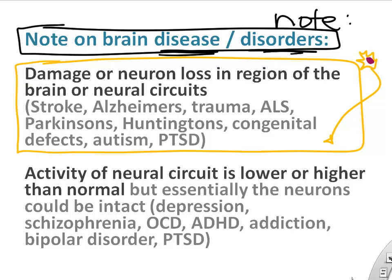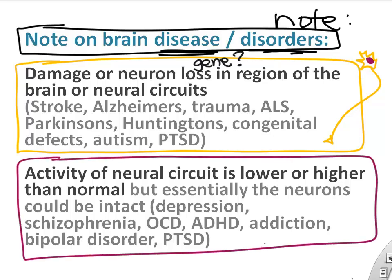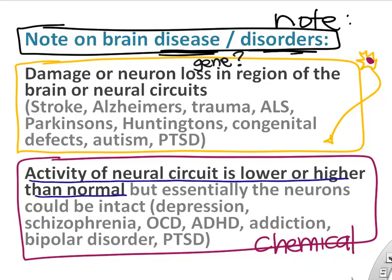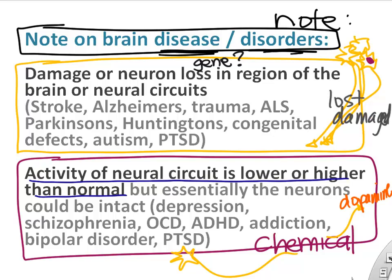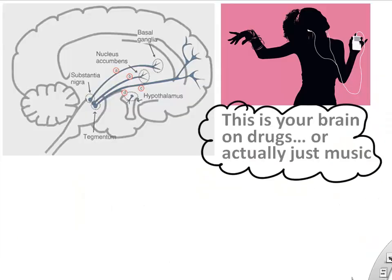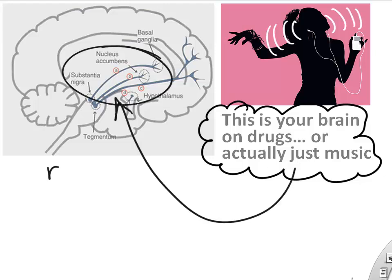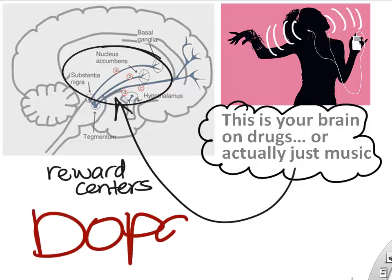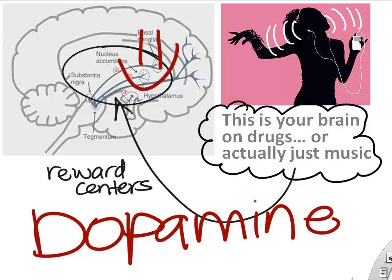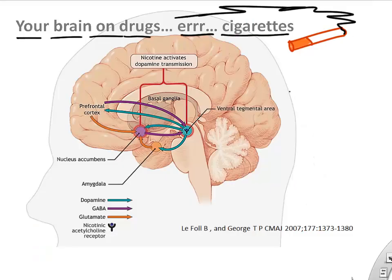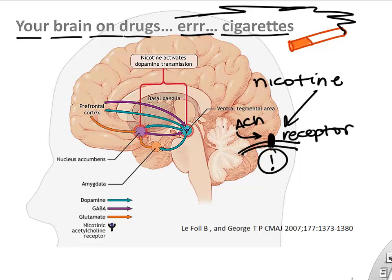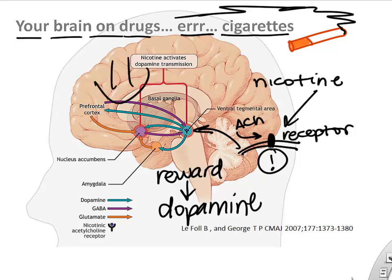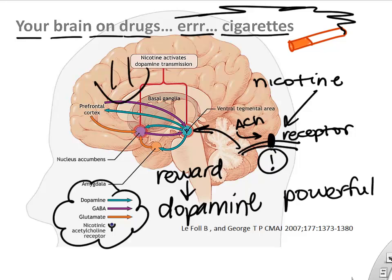Most brain disorders and diseases involve either damage to neurons in a region or imbalances in neural activity. In cases like OCD or addiction, it may be neural activity, whereas in Alzheimer's or stroke, you've actually damaged brain cells. Nicotine in cigarettes binds to acetylcholine receptors, which activates pathways including the dopamine reward pathway — which is how cigarettes and other drugs can have powerful effects on the brain.